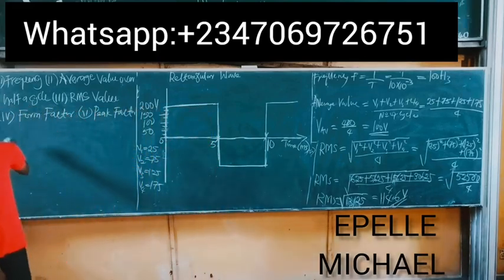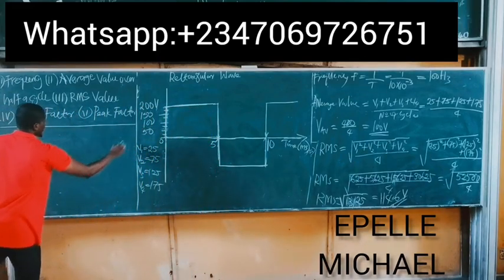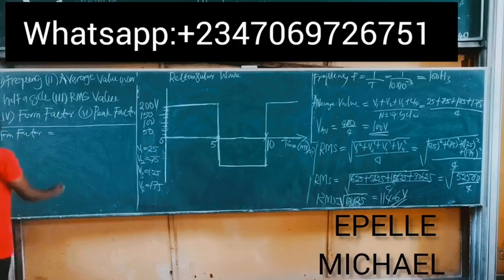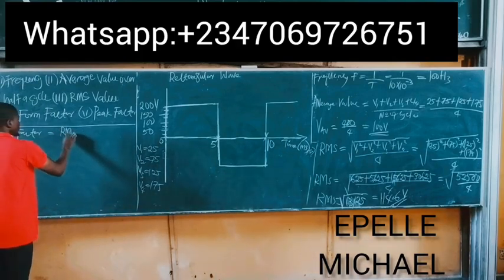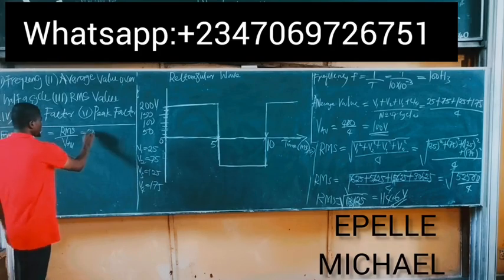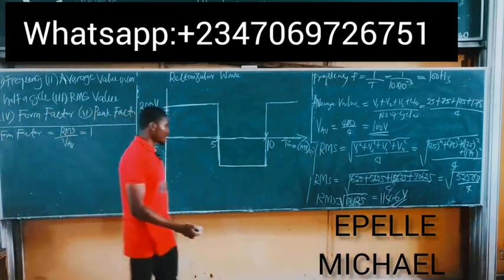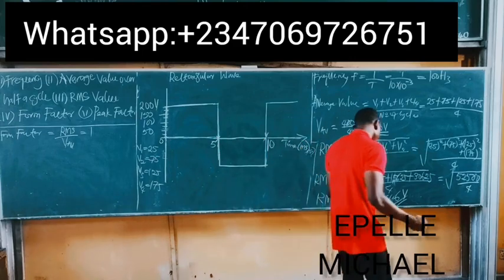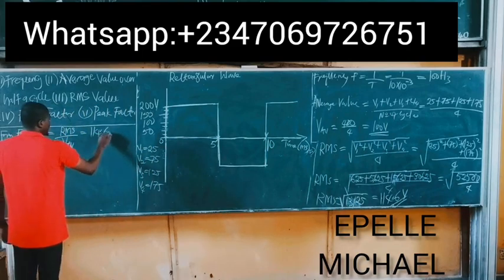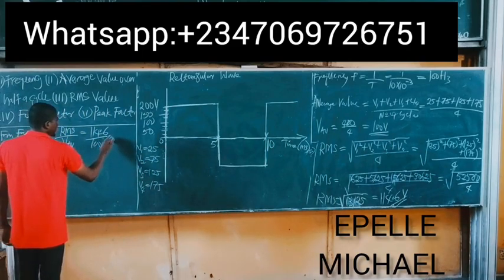So next is to find the form factor. Form factor is simply the root mean square value all over the average value. So this is simply equal to 114.6 divided by 100.